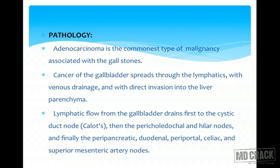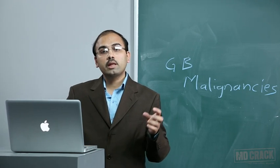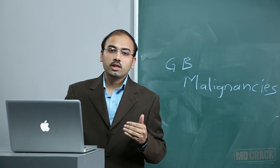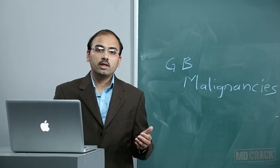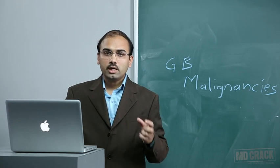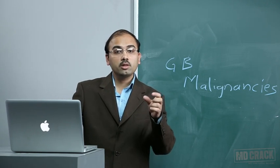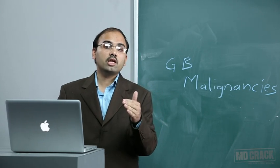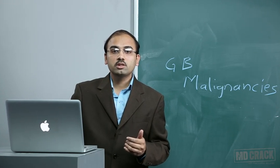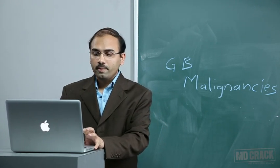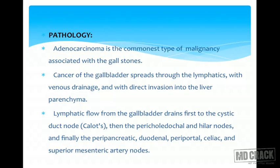Adenocarcinoma is the commonest type of malignancy associated with gallbladder carcinoma, most commonly seen with gallstones. Gallbladder cancer spreads via lymphatics, venous drainage, and direct invasion into the liver bed. As the gallbladder is situated below the liver, spread may occur through lymphatics, venous channels, and direct hepatic extension.